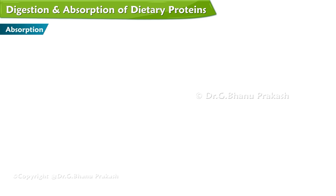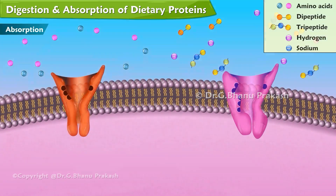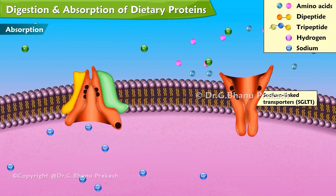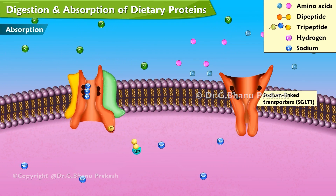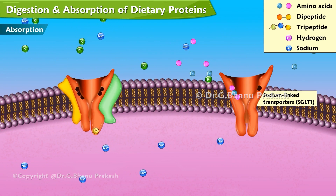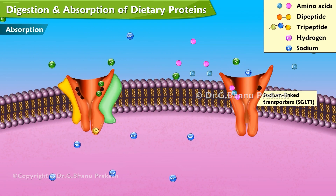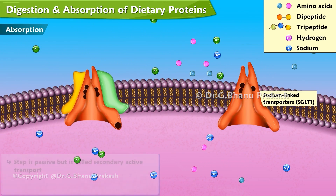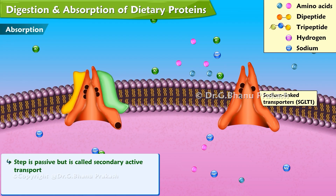These are absorbed from the lumen via sodium-linked transporters or a hydrogen-linked transporter. Individual amino acids are carried by the sodium-linked transporter, which directly absorbs three single amino acids along with one sodium ion, using one ATP molecule. This step is passive but is called secondary active transport, since the energy is indirectly provided by the sodium-potassium ATPase pump.